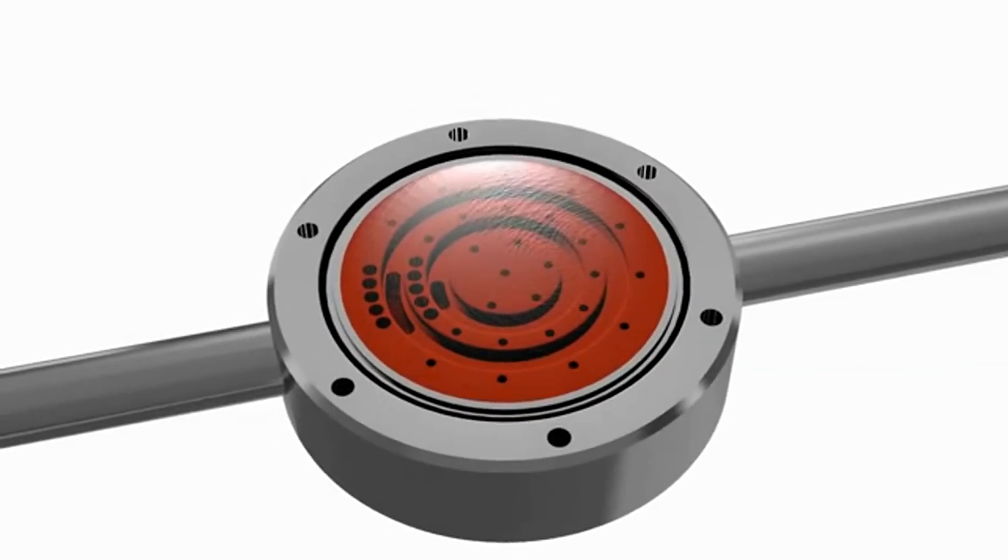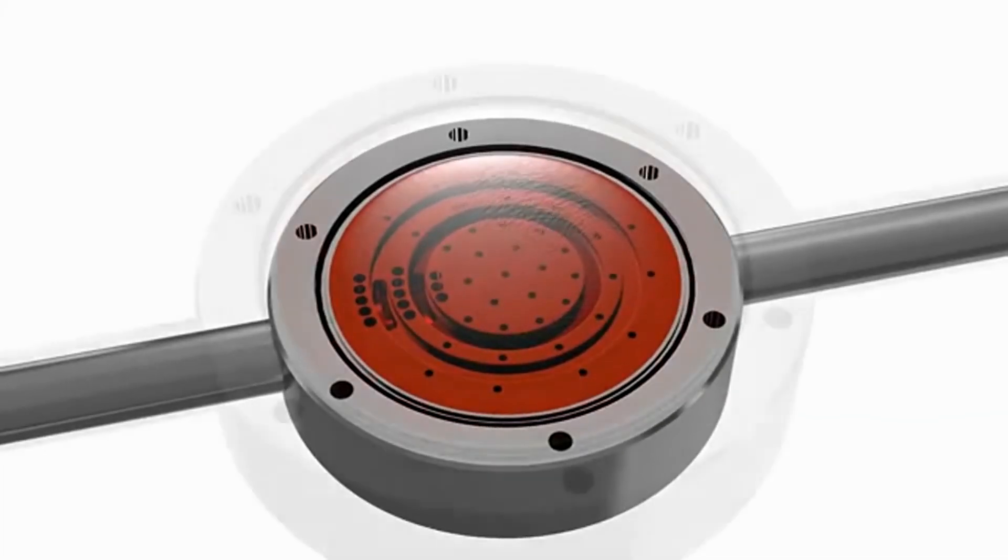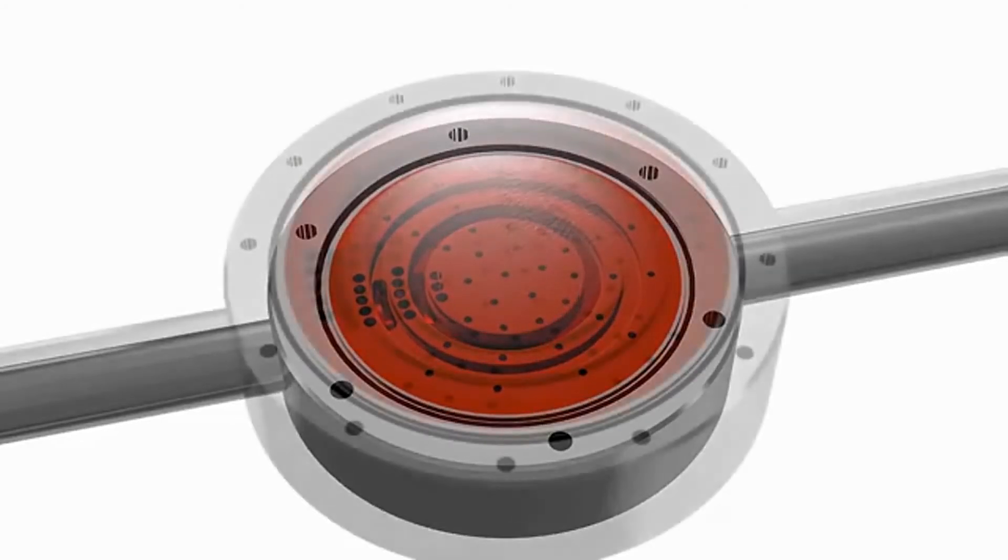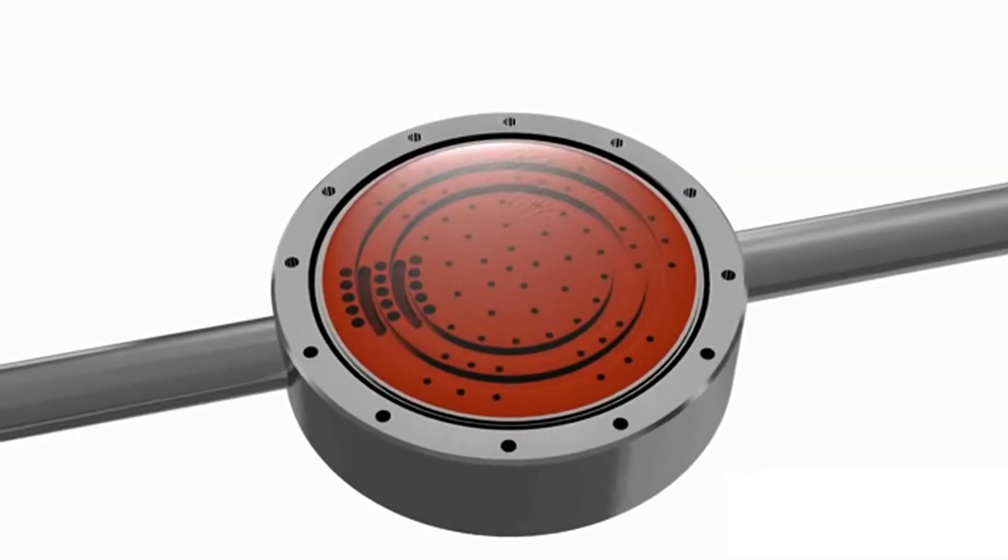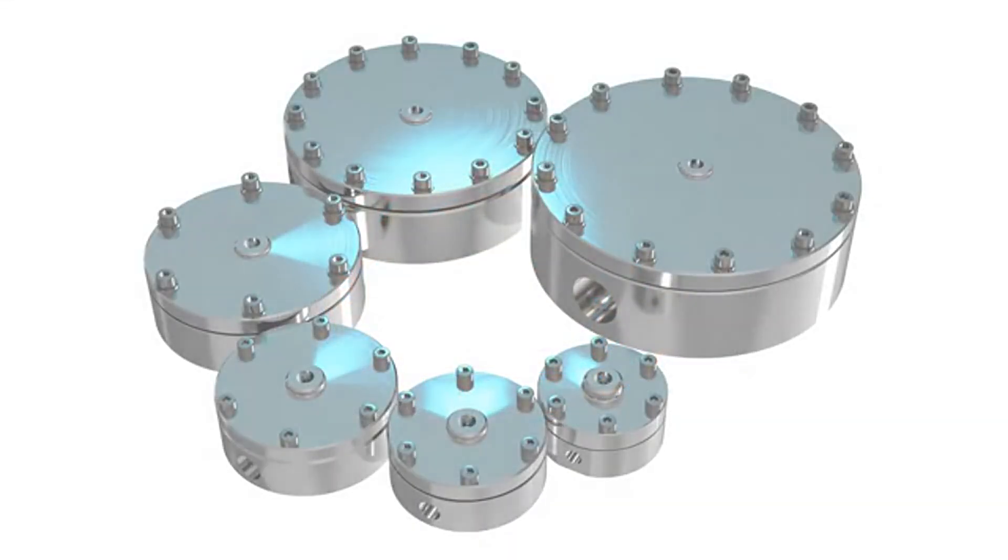Since the technology is scalable, Equilibar can cover a CV range from 10E-11 up to 10 with a limited number of models. For high viscosity and vacuum applications, even larger units up to 4 inches with a CV value of 160 can be supplied.